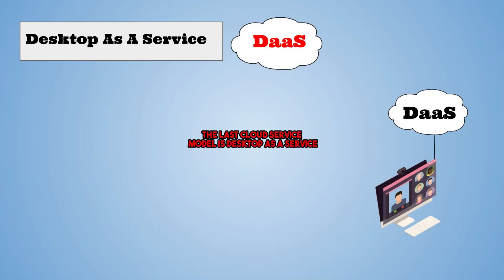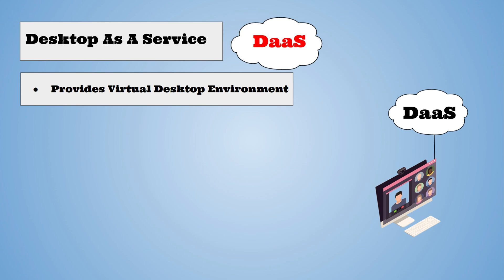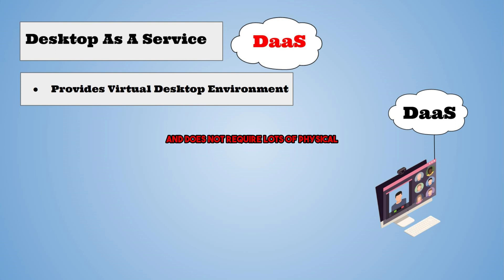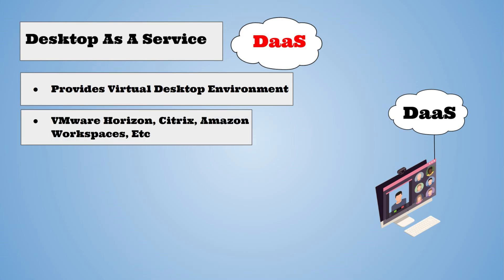The last cloud service model is Desktop as a Service, which offers exactly what it sounds like. This service provides a virtual desktop over the Internet that users can connect to. Users can access the desktop environment with a click of a button and it does not require lots of physical resources to do so. Popular providers include VMware Horizon, Citrix, Amazon Workspaces, and more.